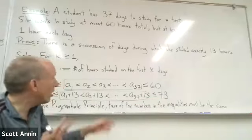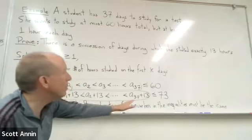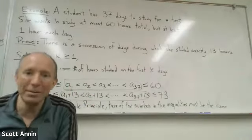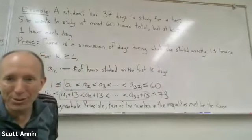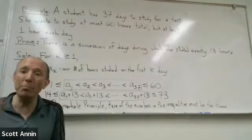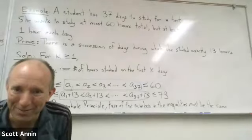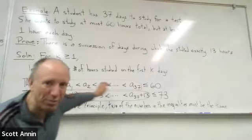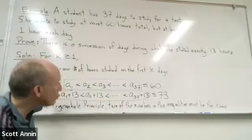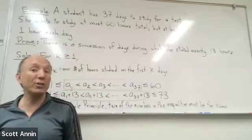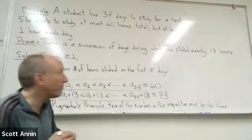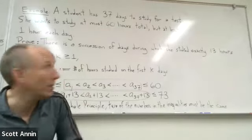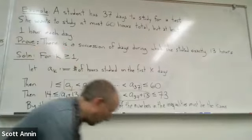So if we are concluding that two of the numbers are the same, it must be that some number from the first sequence is the same as some number from the second sequence. Because the numbers within the first sequence are all distinct. The numbers within the second sequence are all distinct. So somehow it has to be that there's a number from the first sequence that agrees with some number from the second sequence. Let's write that down.